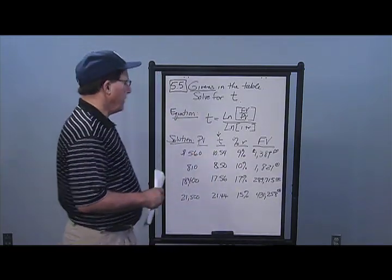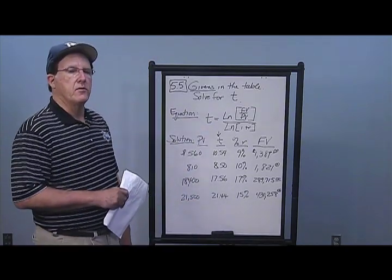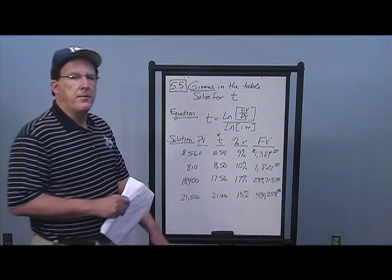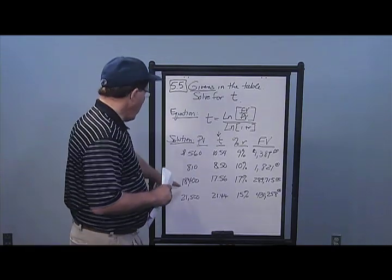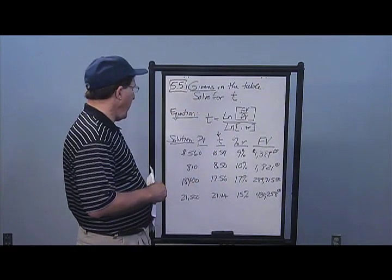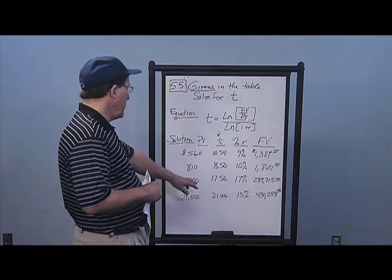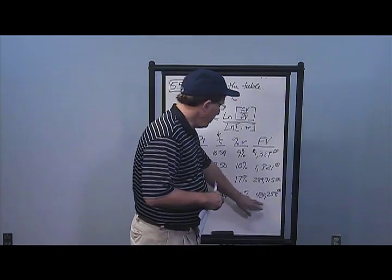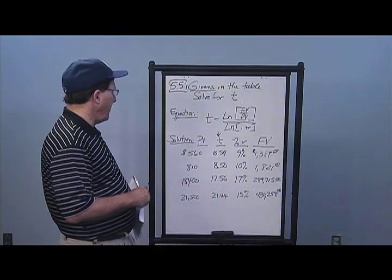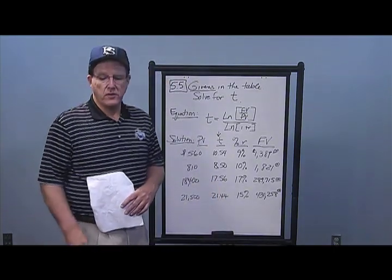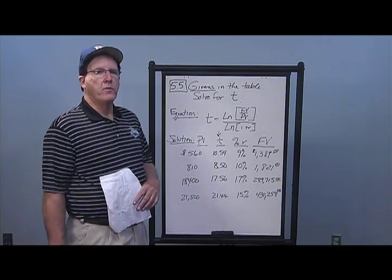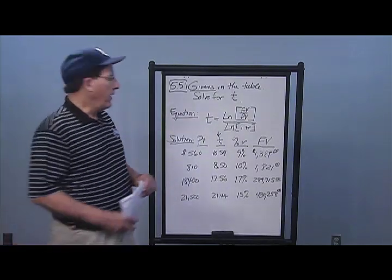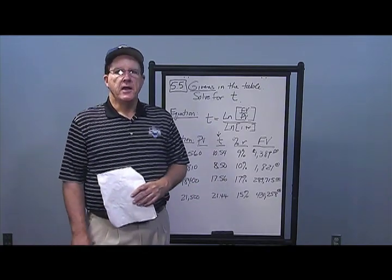Always check your answers using the future value formula: FV = PV × (1 + R)^T. For case two, growing $810 to $1,821 at 10% takes 8.5 years. Case three: $18,400 to $289,715 at 17% takes 17.56 years. Case four: $21,500 to $430,258 at 15% takes 21.44 years. This formula is very useful for figuring out how to grow money from point A to point B over a certain number of years.